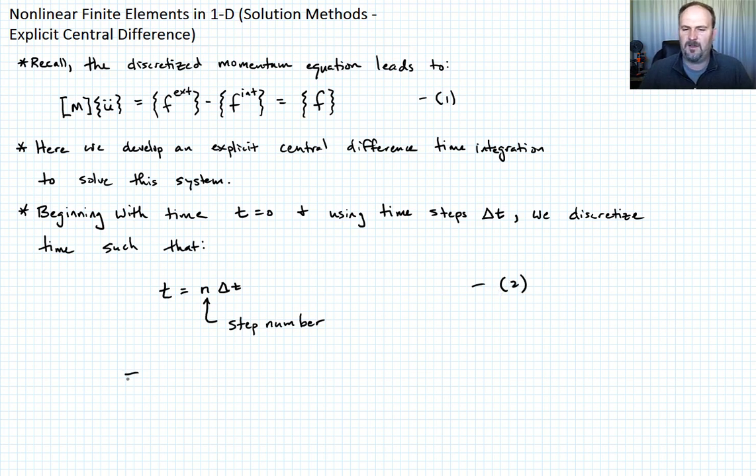Okay, and we'll call this equation 2. And what that means is that if I want to, I'm going to use some superscripts now. So for example, my displacement vector, let's call this u sub n, that's going to be equal to u evaluated at the time n times delta t. That's just my notation. Let's call that equation 3, just again for definition.